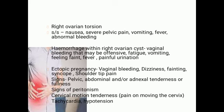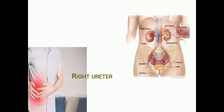Moving on to the signs: pelvic, abdominal, and adnexal tenderness or fullness is felt at the right iliac fossa. Signs of peritonism may also be present. Cervical motion tenderness — that is, pain on moving the cervix — is present, and tachycardia and hypotension may be additional features.